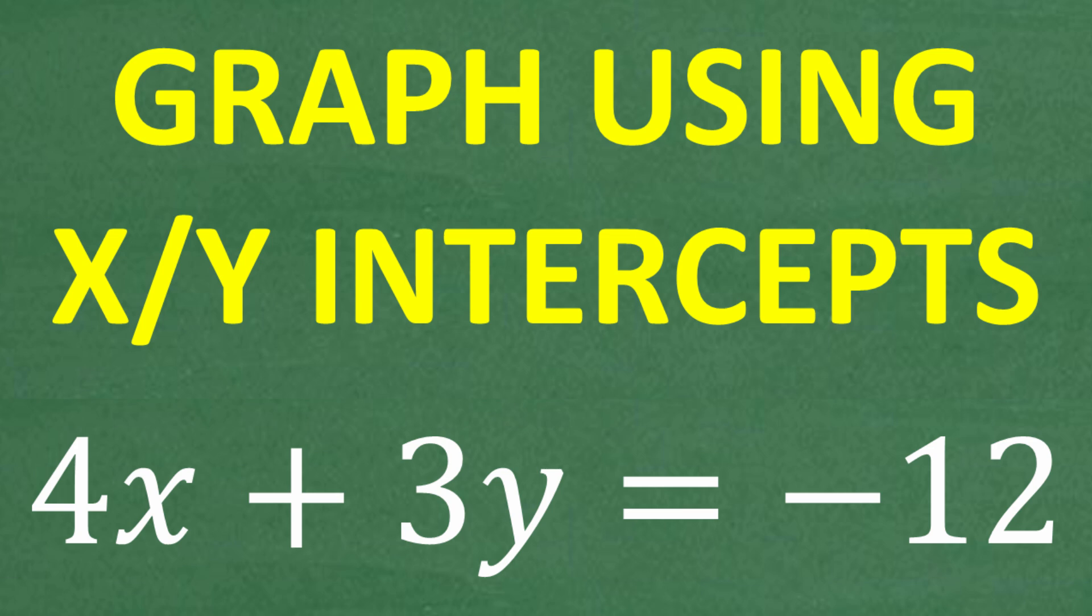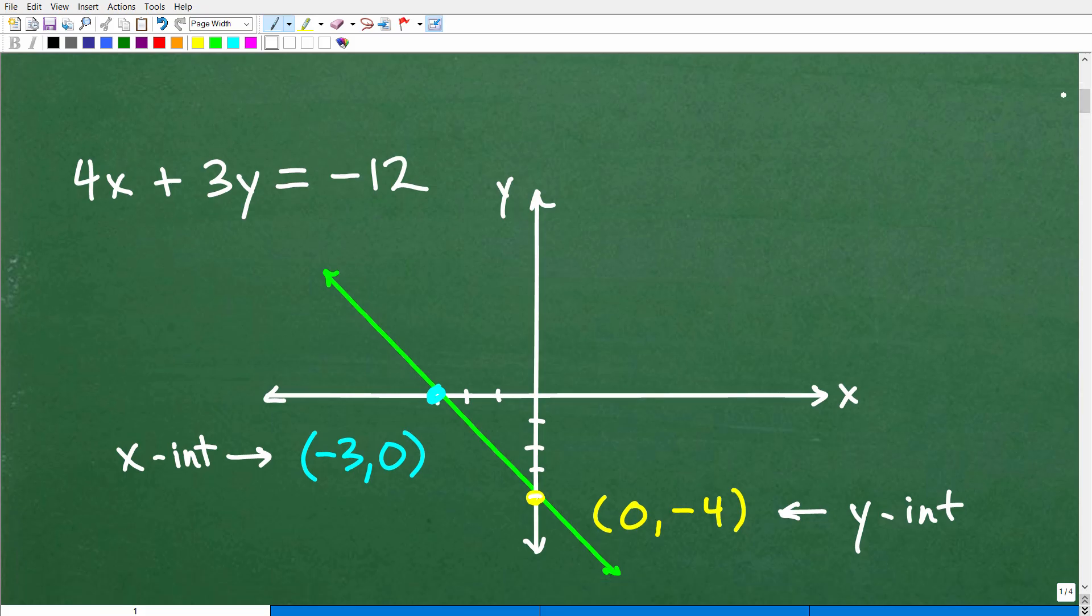Okay, so let's go ahead and get into this. I'm going to show you the graph to this linear equation and the intercepts. So here is the line, 4x plus 3y is equal to negative 12. Here is the graph in green.